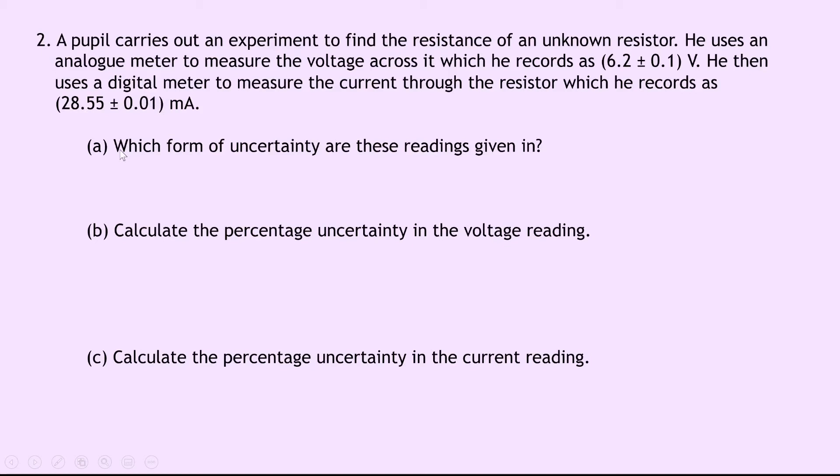Part A says which form of uncertainty are these readings given in? Well we can see that both of them are given in absolute form with the brackets around them and the units appearing after the brackets.